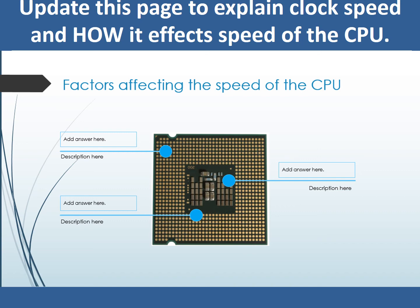Your answer should include that as you increase the clock speed, more fetch, decode and execute cycles can happen per second, meaning that the processor will be quicker. A disadvantage is that if we overclock it too much it can cause excessive heat.